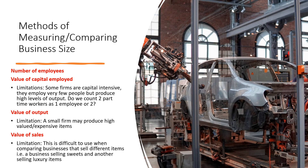A limitation of these first two methods is that some firms are capital intensive — they employ very few people but produce high levels of output. A further limitation for the number of employees method is: do we count two part-time workers as one employee or two? For example, if you have one part-time worker doing 50% and another doing 50%, do we count them as two employees or one?